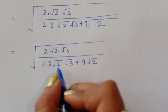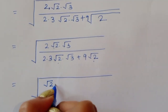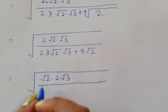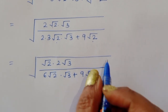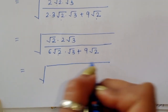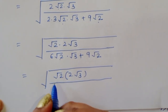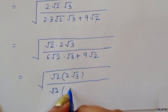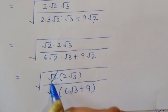We can take square root of 2 as a common factor from both numerator and denominator. In the numerator: square root of 2 times 2 square root of 3. In the denominator: square root of 2 times the quantity 6 square root of 3 plus 9. Cancelling square root of 2 from both sides, we get 2 square root of 3 divided by 6 square root of 3 plus 9.